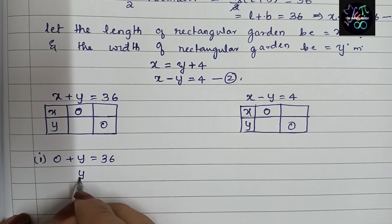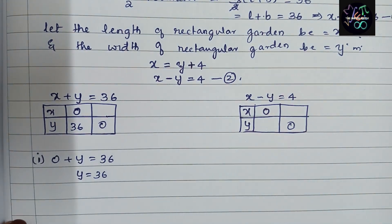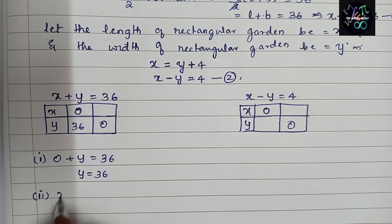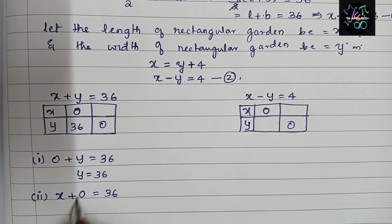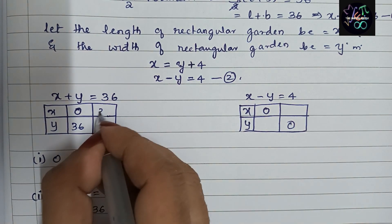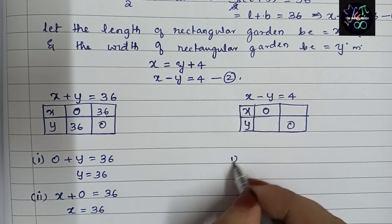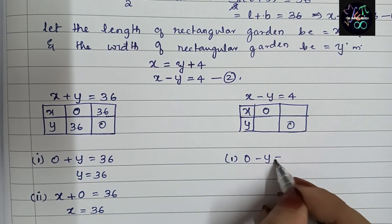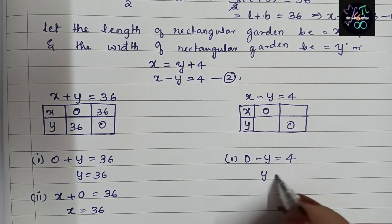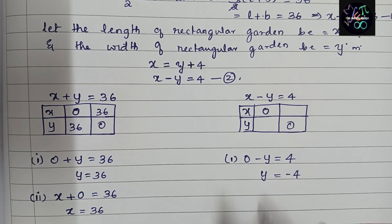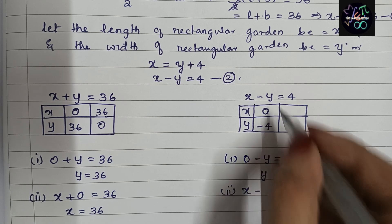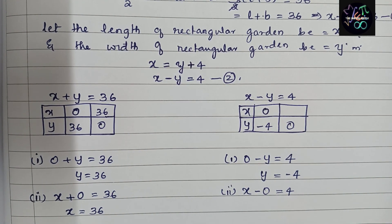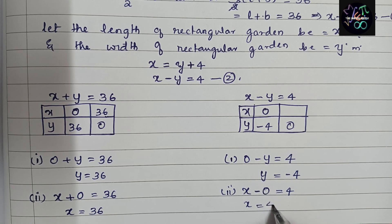For Equation 1 — if x = 0, then y = 36. If y = 0, then x = 36. For Equation 2 — if x = 0, then 0 minus y = 4, so y = minus 4. If y = 0, then x minus 0 = 4, so x = 4. We have our table values: (0, 36), (36, 0) for line 1 and (0, -4), (4, 0) for line 2.